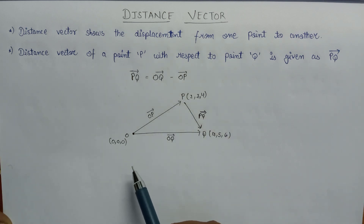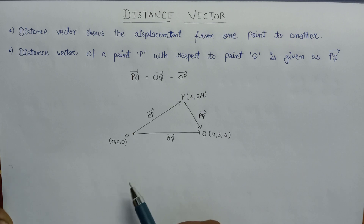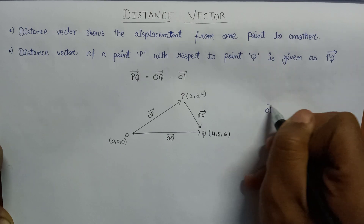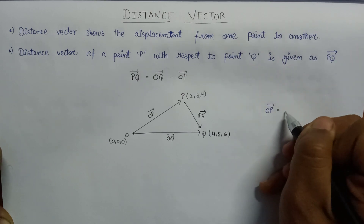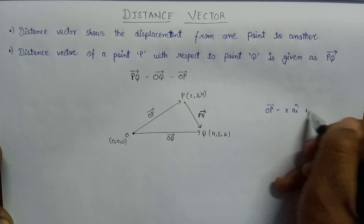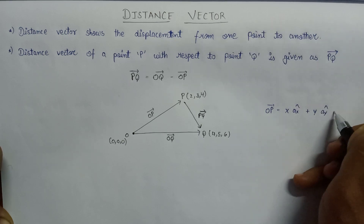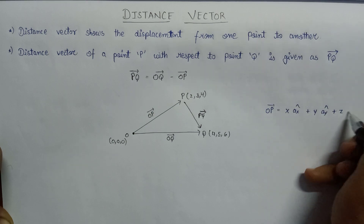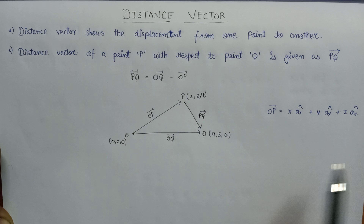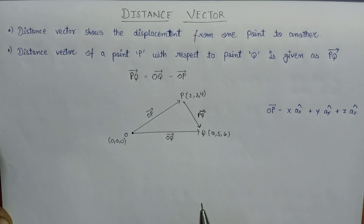Since in the previous lecture we talked about the position vector, the representation for the position vector is OP vector having the representation as X·AX cap plus Y·AY cap plus Z·AZ cap. This is the basic representation for OP vector.